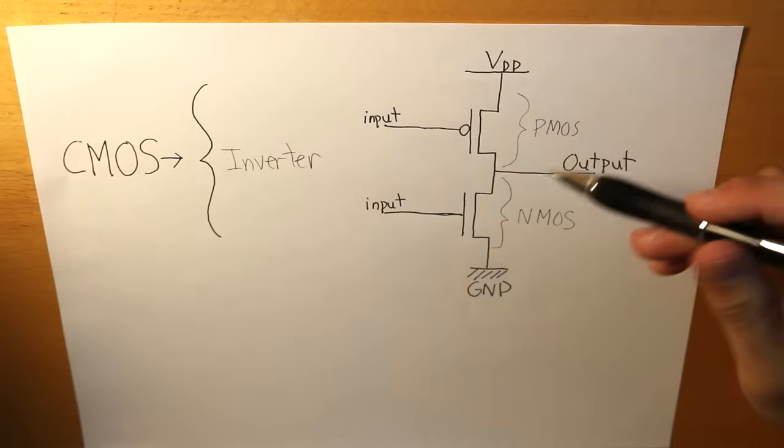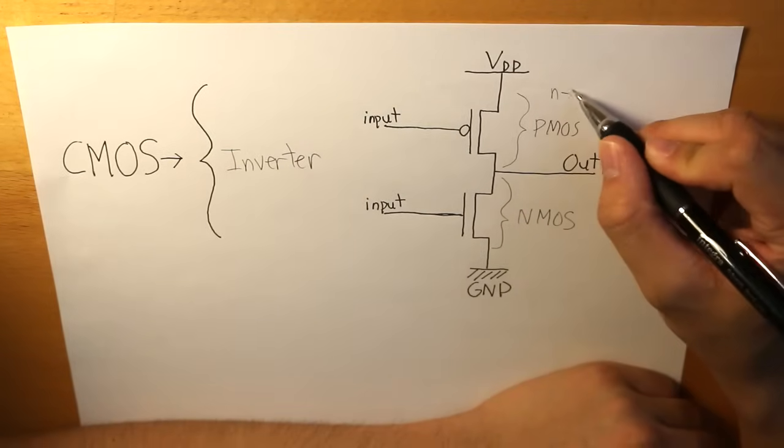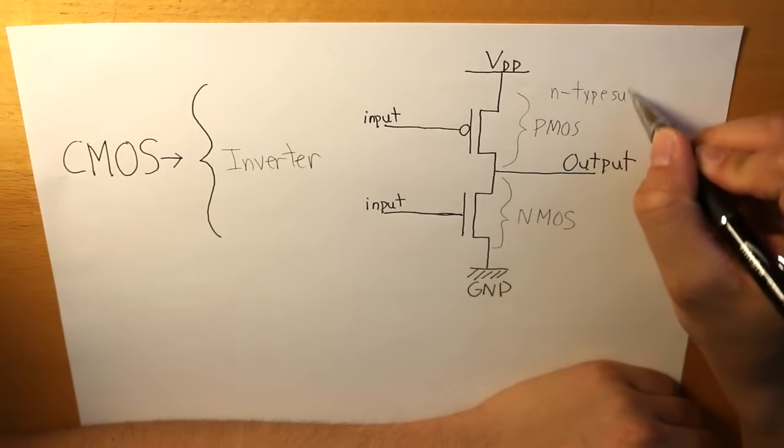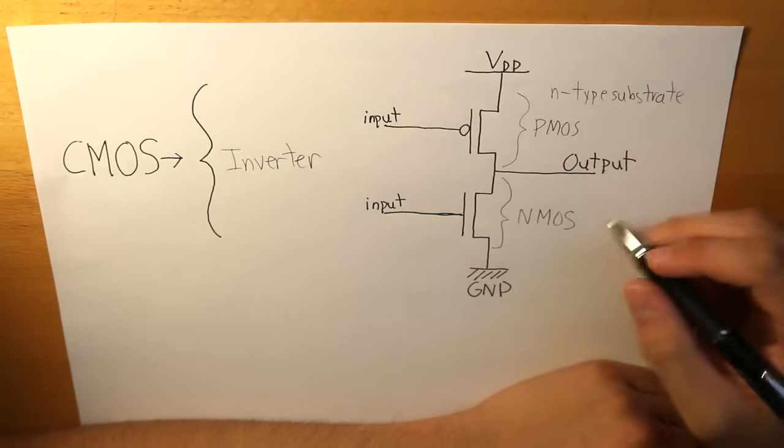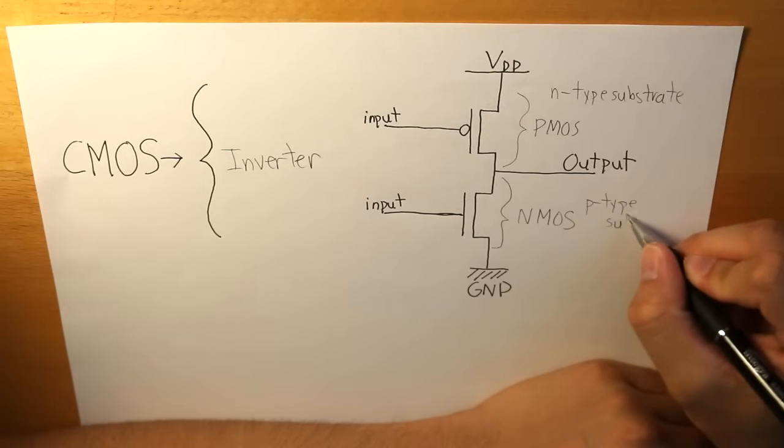In addition, a PMOS is part of the N-type substrate and the NMOS is part of the P-type substrate.